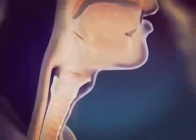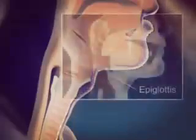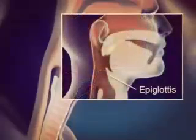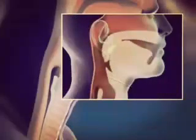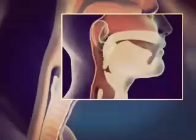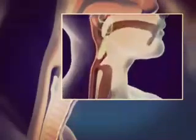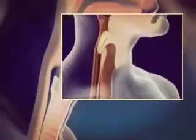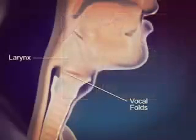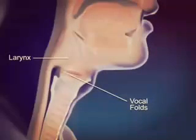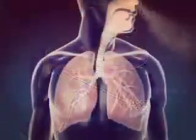Air moves from pharynx, larynx and trachea. The epiglottis prevents the entry of food into the windpipe or trachea. Trachea divides into bronchi and further bronchioles.